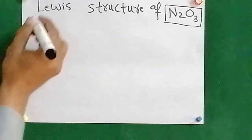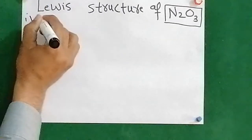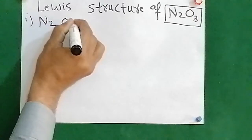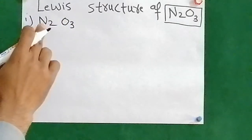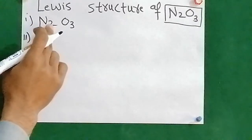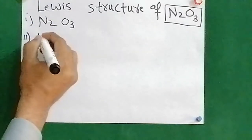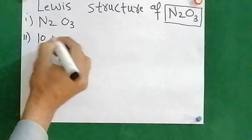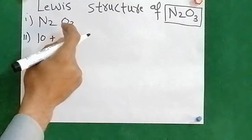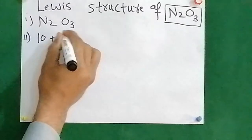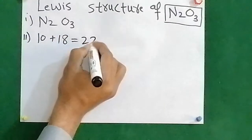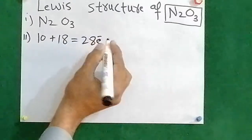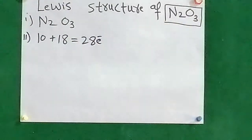First of all, we can write the formula which is N2O3, then we determine the number of valence electrons. Nitrogen belongs to the 5th group, so it has 5 valence electrons, multiplied by 2 gives 10 valence electrons. Oxygen belongs to the 6th group, has 6 valence electrons, so total 18 electrons from oxygen. That gives us a grand total of 28 electrons to distribute among 5 atoms — 2 nitrogen and 3 oxygen.